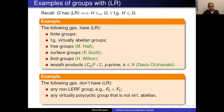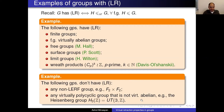Another example: if you have a virtually polycyclic group that is not virtually abelian, then it won't have LR. The easiest such group is the Heisenberg group — upper triangular integer matrices with ones on the diagonal, a nice step-2 nilpotent group which is LERF and has many nice properties, but it won't have LR. One reason is it has an infinite center which cannot be a retract of any finite index subgroup.